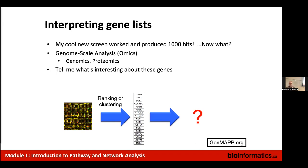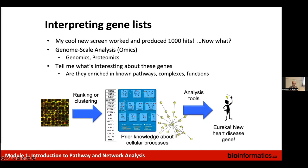What do the genes have in common? What do they do? How are they related to a disease or phenotype that I'm studying? Frequently the starting point for analyzing genomics data is to rank genes by some score like gene expression, or to cluster them to find genes that work similarly. But then what happens next? In this course we're going to talk about what happens next.